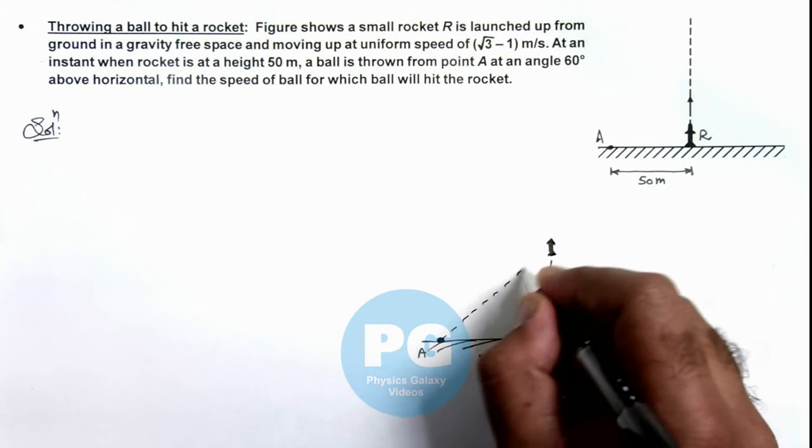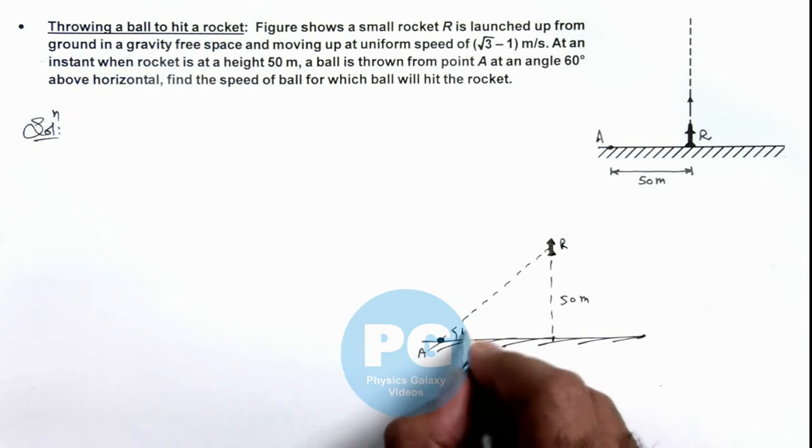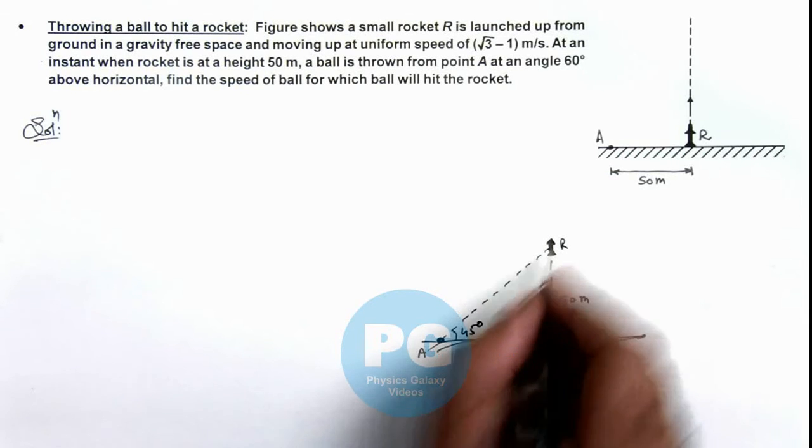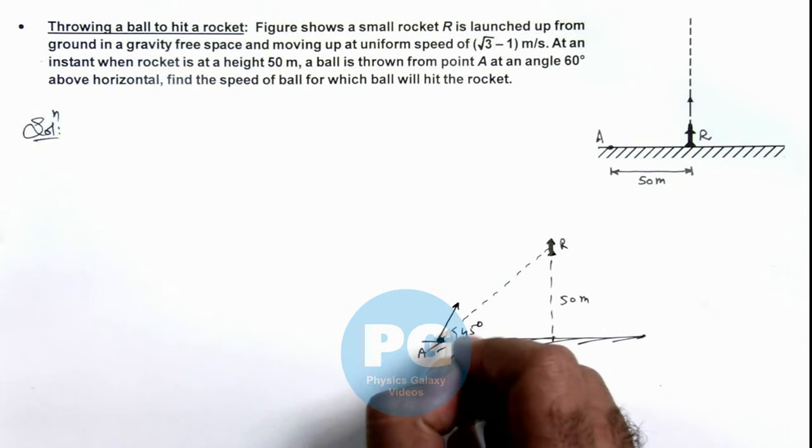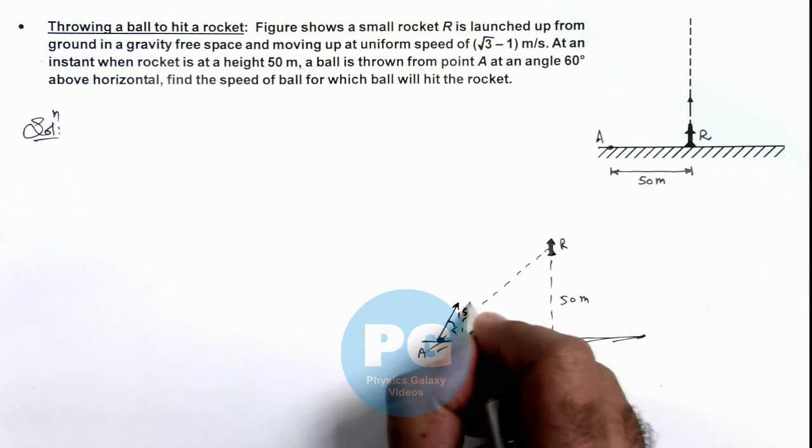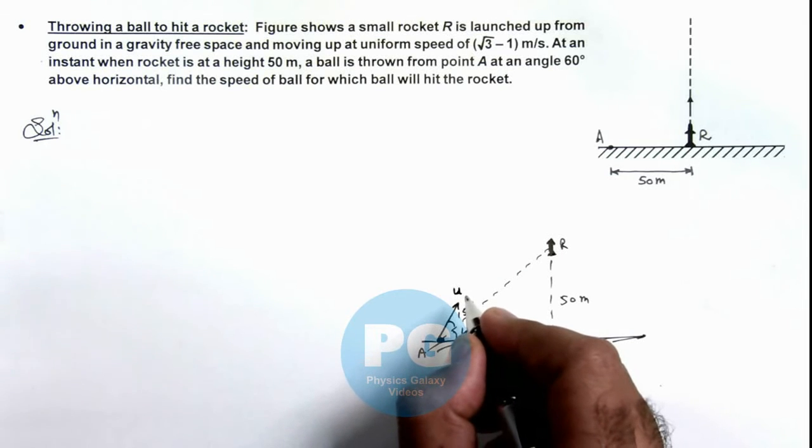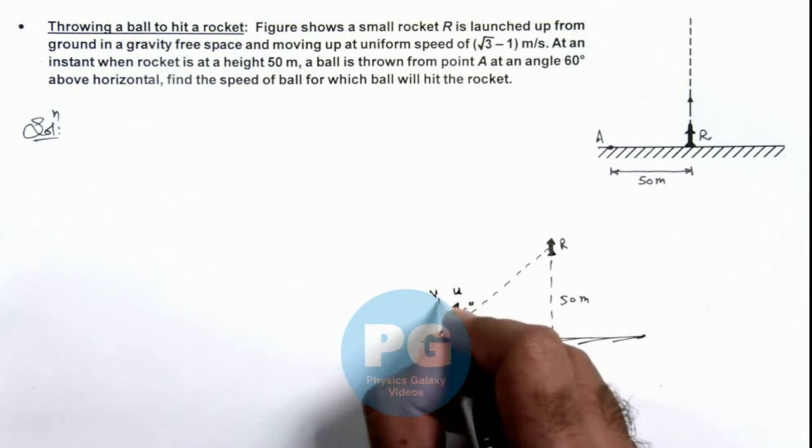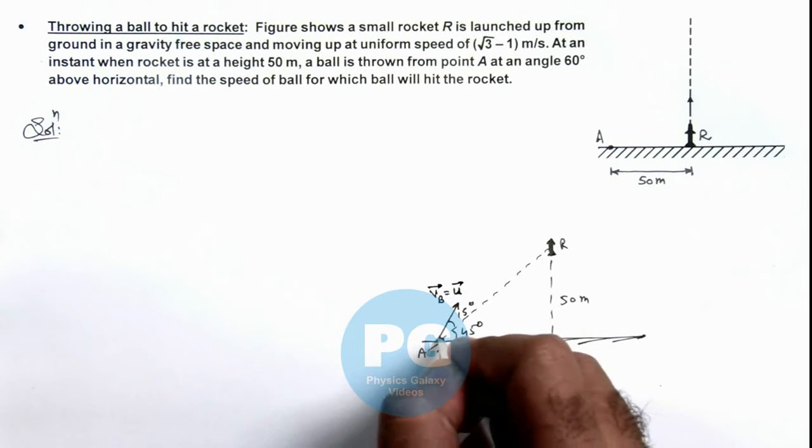The line joining the rocket and A, as these two distances are equal, this is 45 degrees. And at this instant a ball is fired at an angle 60 degrees, that means this angle is 15 degrees, and we are required to find this speed u or the velocity of ball at which it should be fired so that the ball will hit the rocket.